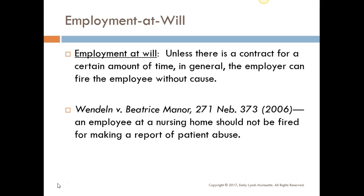Employment at will is the law of the land in California, meaning that if you don't have an employment contract you've signed with the employer or even an employee handbook, you can typically be fired for almost any reason other than discriminatory reasons like gender, sexual orientation, or age. In the Wendland versus Beatrice Manor case, an employee reported the nursing home for abusing a patient and was fired.